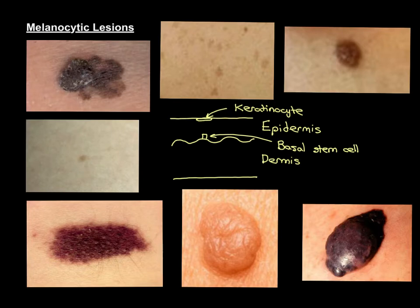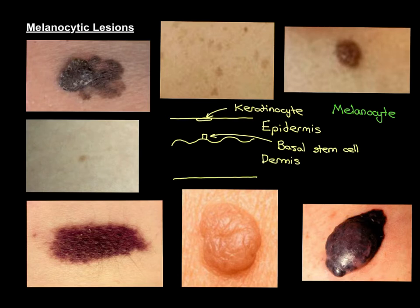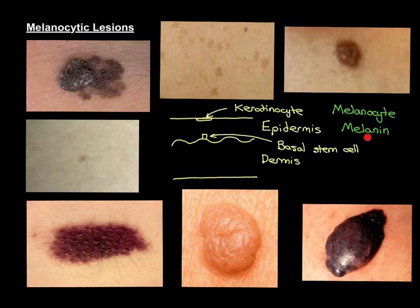Now let's get on to what we really wanted to discuss: the melanocytes. Melanocytes are the cells from which all of these melanocytic lesions are going to arise. Melanocytes are cells responsible for the production of the pigment that pigments the skin — they produce a pigment called melanin, which determines how dark or light your skin is. The more melanin you produce, the darker your skin will be. People who have black skin will have melanocytes producing far more melanin than someone who has very white skin.